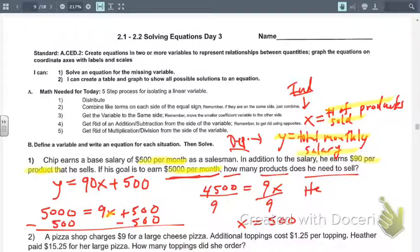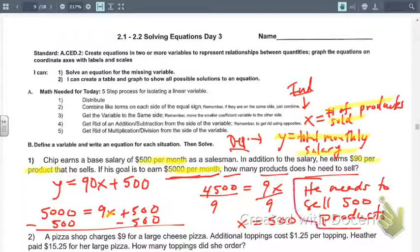So he needs to sell 500 products. And that's your final answer.